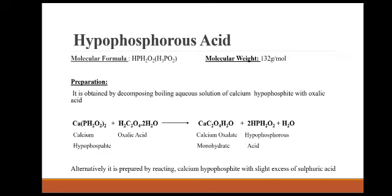The first monograph is hypophosphorus acid. The molecular formula is H(PH₂O₂), also written as H₃PO₂, and the molecular weight is 132 g/mol. It is prepared by decomposing a boiling aqueous solution of calcium hypophosphate with oxalic acid. When calcium hypophosphate reacts with oxalic acid and decomposes, it forms calcium oxalate monohydrate, hypophosphorus acid, and water.